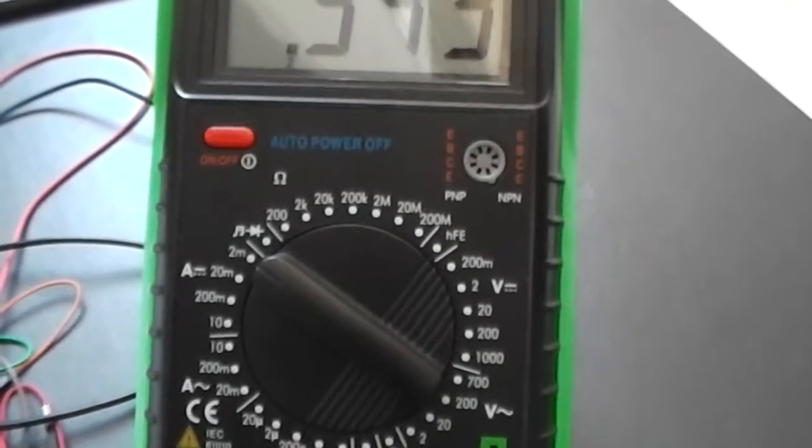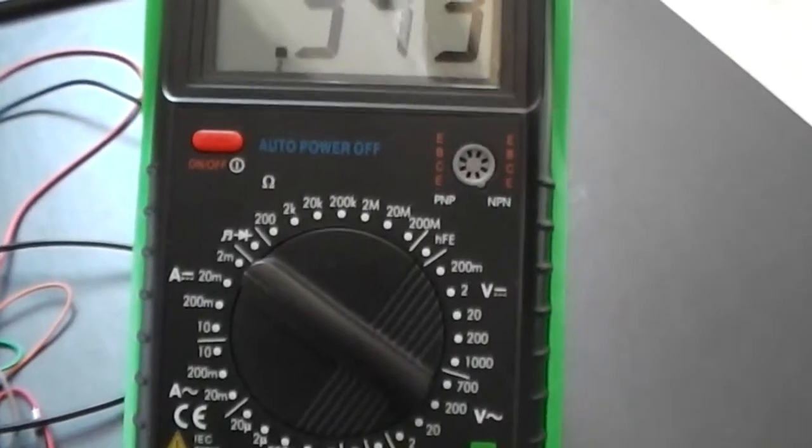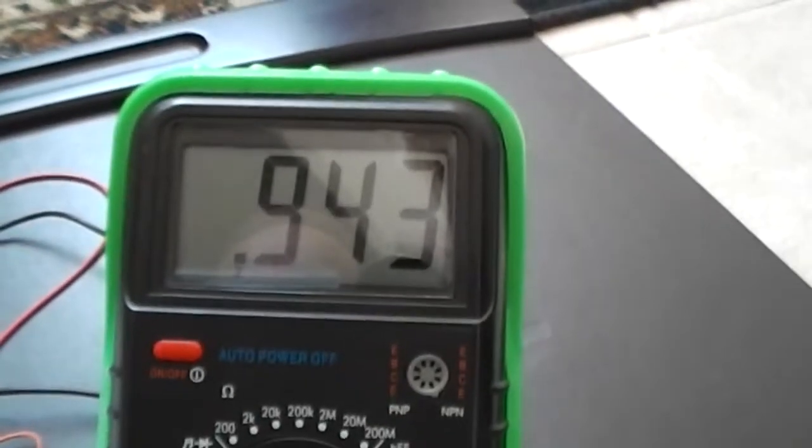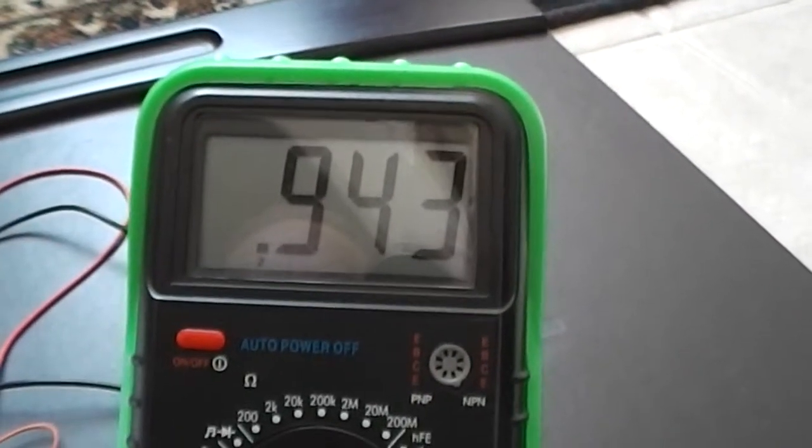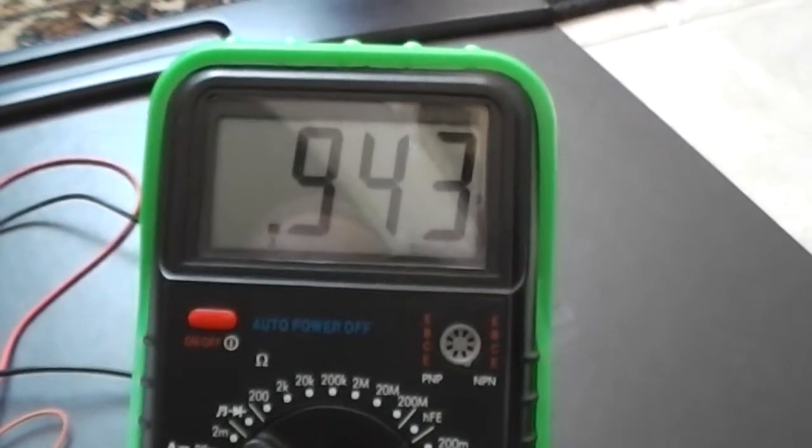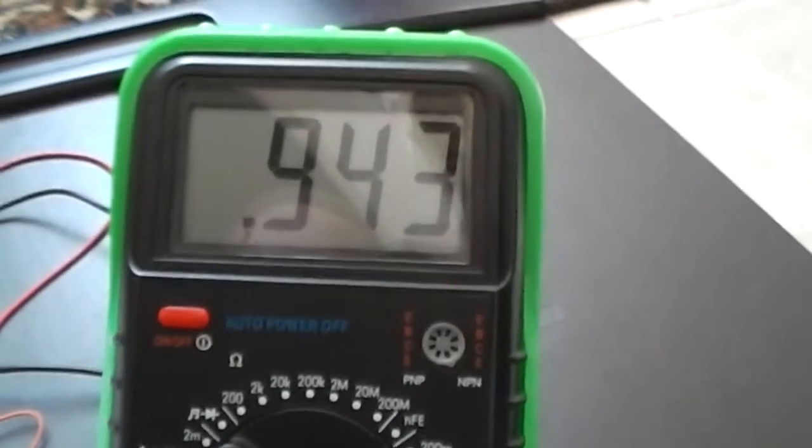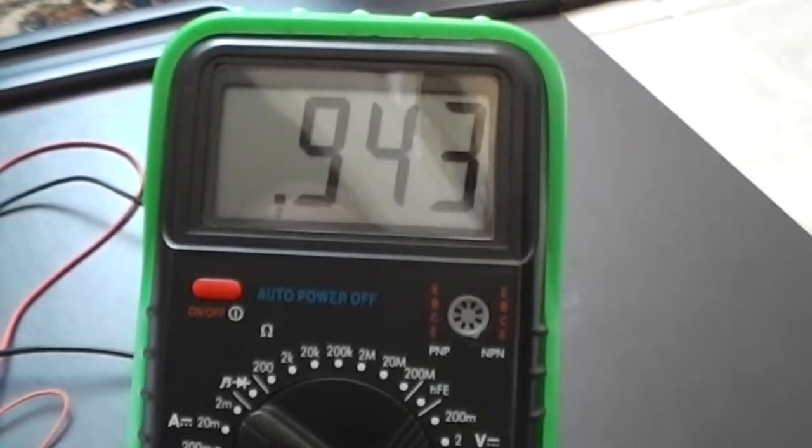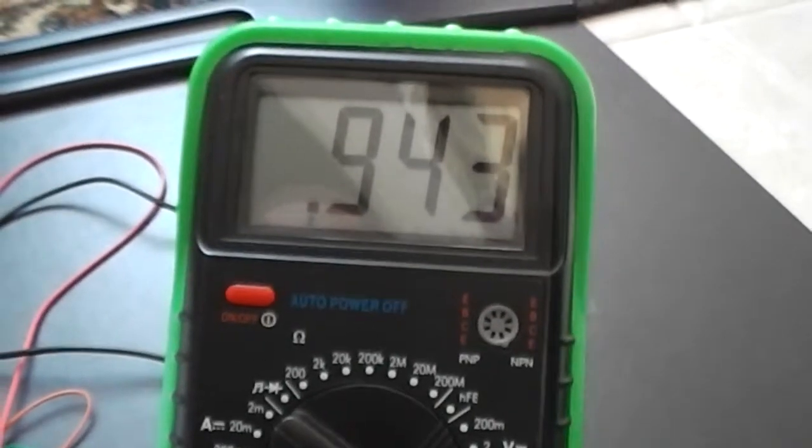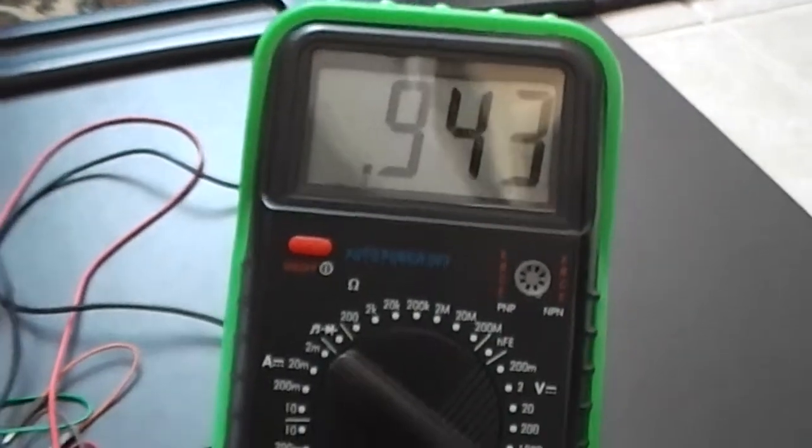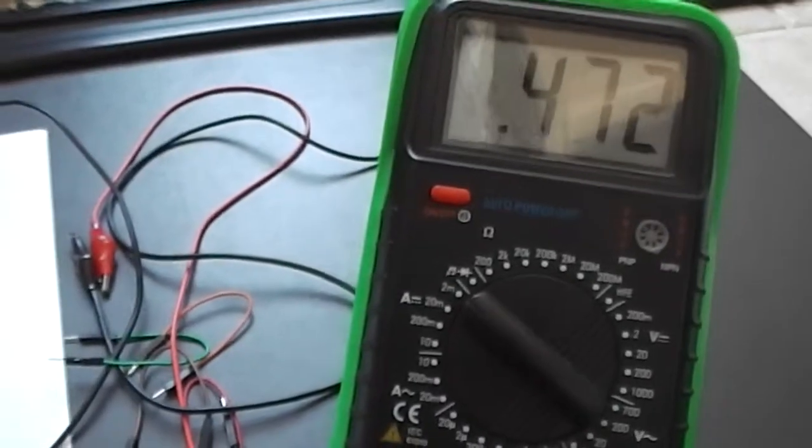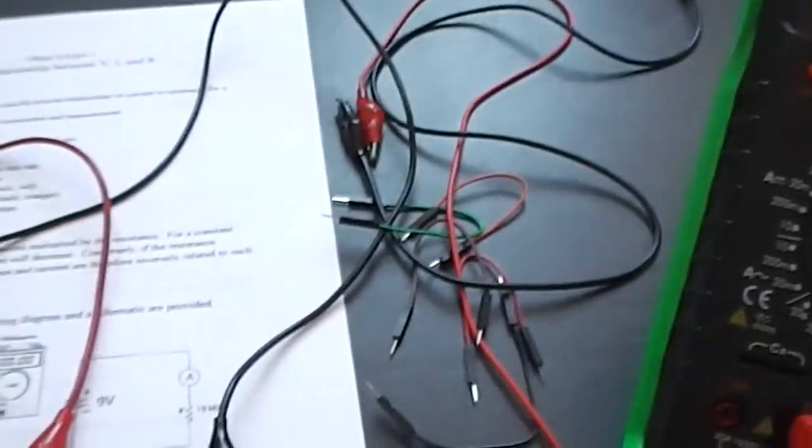Again, you're in 2 milliamp range. So therefore, that's going to be in milliamps. So it's 0.943 milliamps. So I guess you can go ahead and put it to the proper prefix, which would be 943 microamps. So that's what the current is. All right, let's go ahead and take a look at the next page.